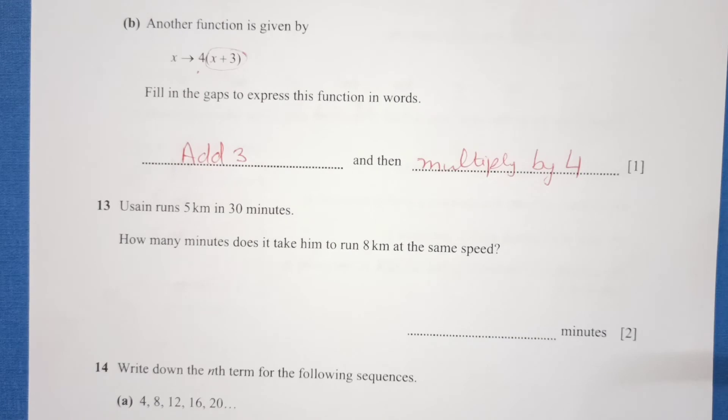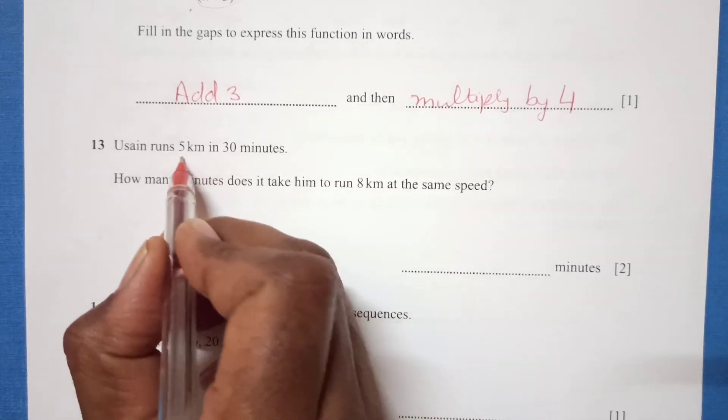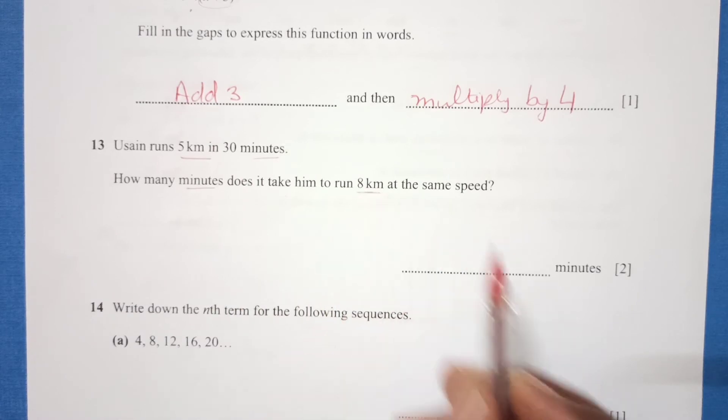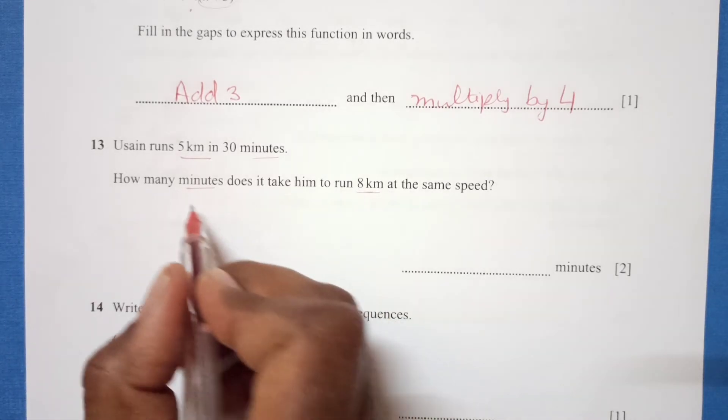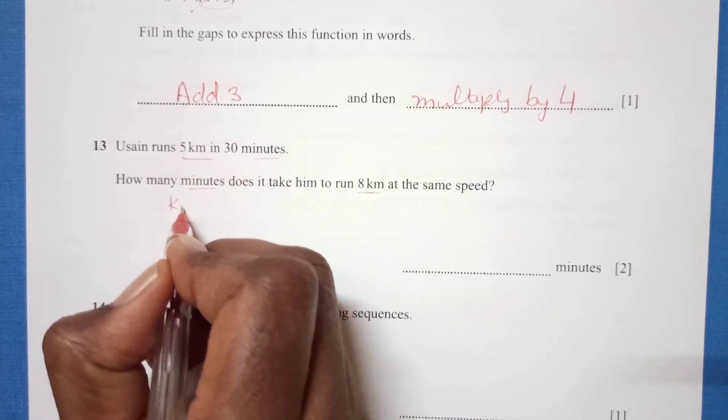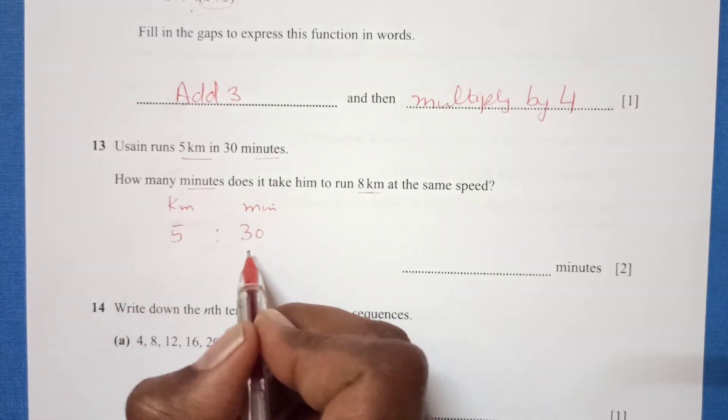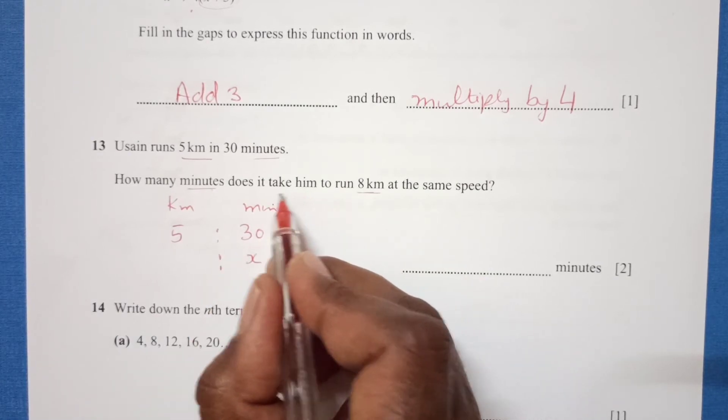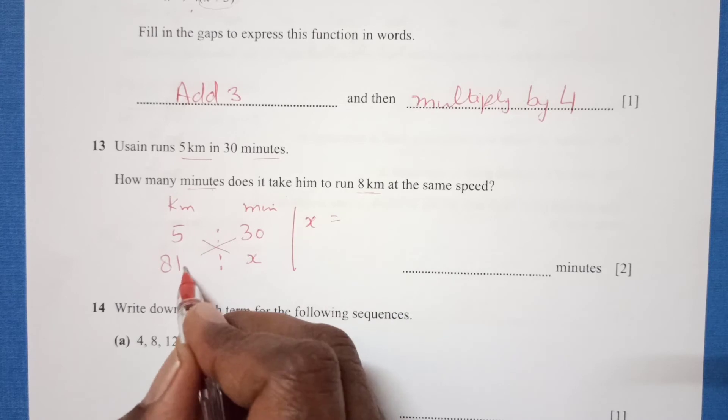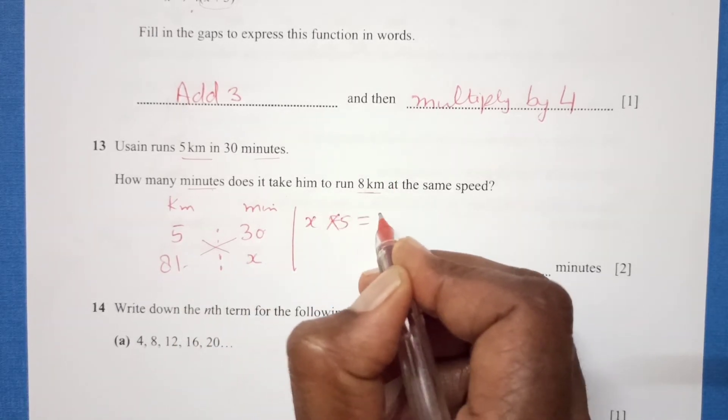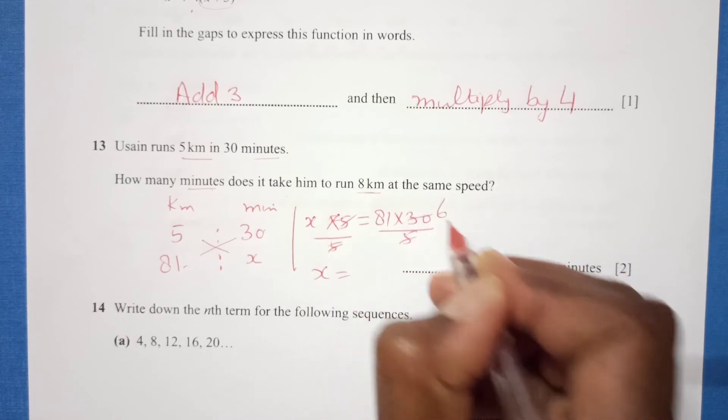Number 13: Usain runs 5 kilometers in 30 minutes. How many minutes does it take to run 8 kilometers at the same speed? We can use ratios here. 5 kilometers in 30 minutes, and 8 kilometers in x minutes. Cross multiply: x equals 8 times 30 divided by 5.